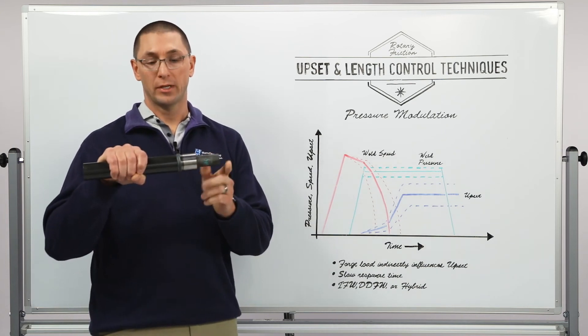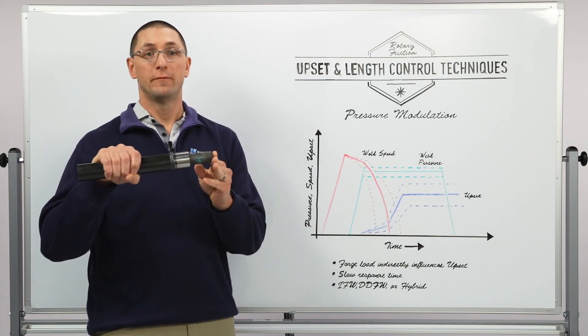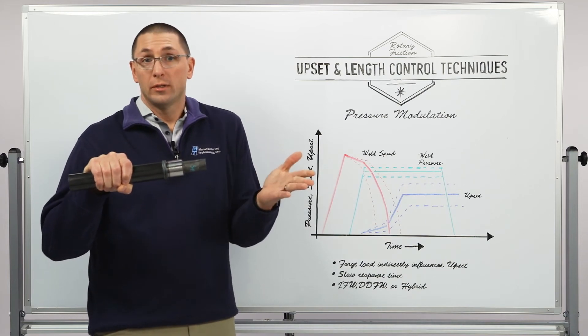This allows me to control the amount of upset that I get between the two parts very repeatably, and therefore I'm closing the loop.